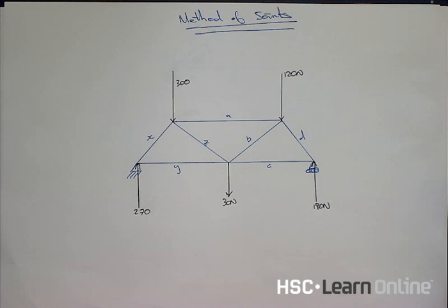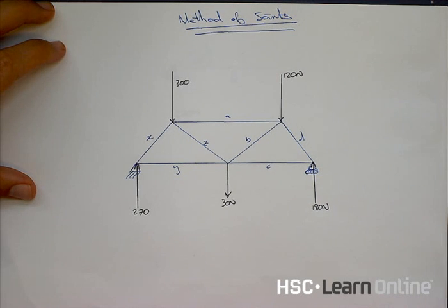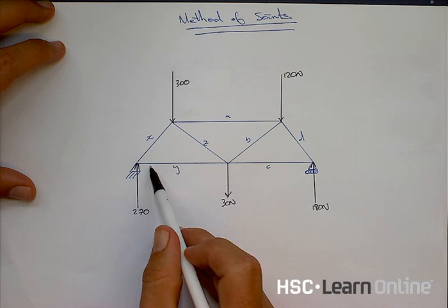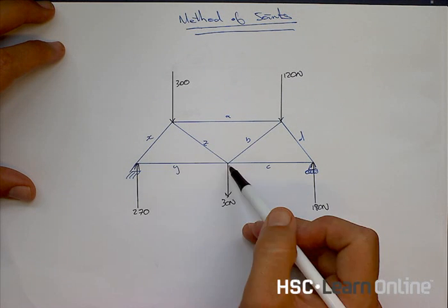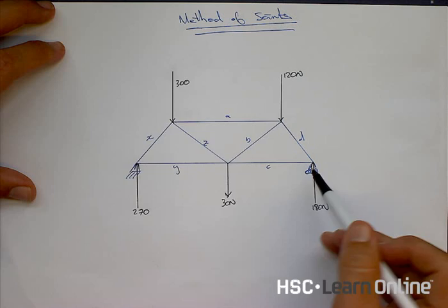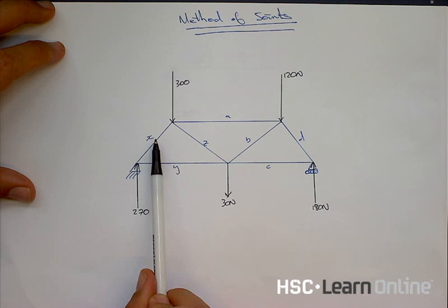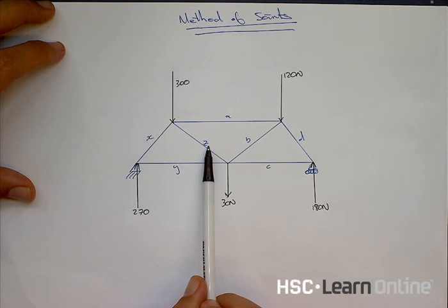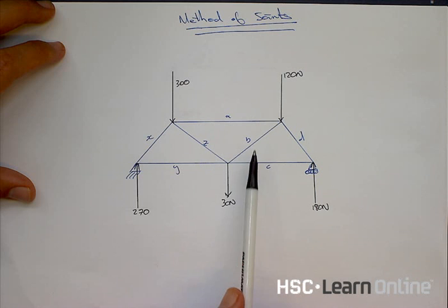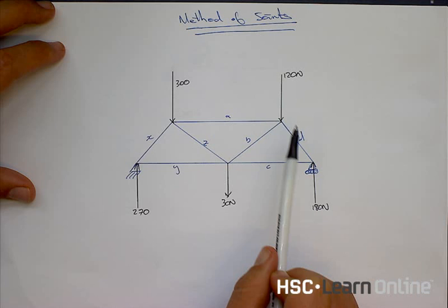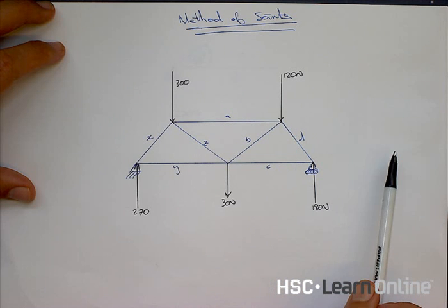This short video is going to start off talking about the concept of method of joints. This is a mathematical tool used to calculate what the forces within each truss in a bridge are. Here is an example of a bridge that has a number of trusses X, Y, Z, A, B, C, and D, with a number of forces acting on it.